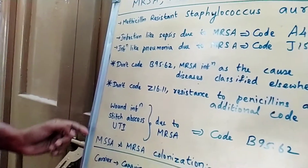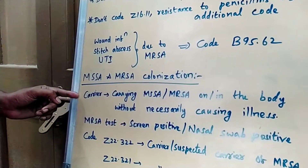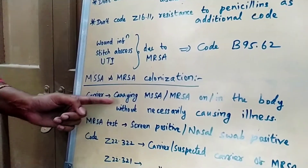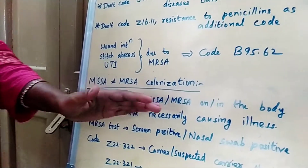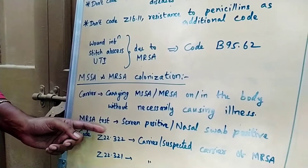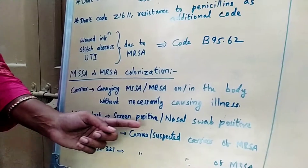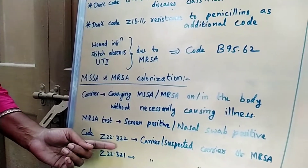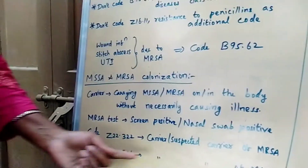Now, MSSA and MRSA colonization — what is colonization? A carrier is someone carrying MSSA or MRSA on or inside the body without necessarily causing illness. If a patient comes in for an MRSA test and it turns out to be screen positive or nasal swab positive, then we give Z22.322 for carrier or suspected carrier of MRSA.